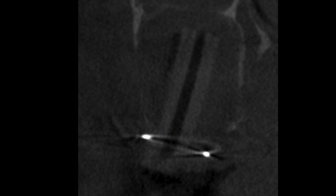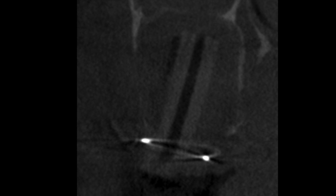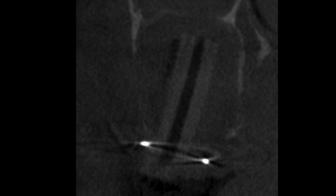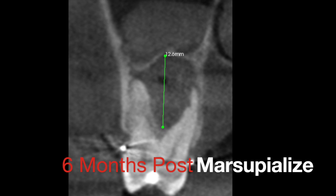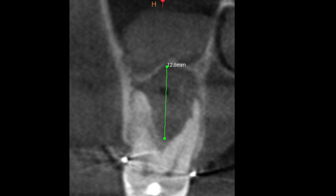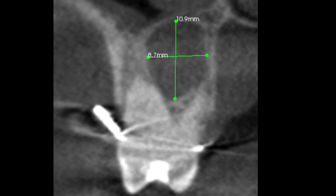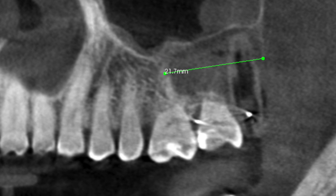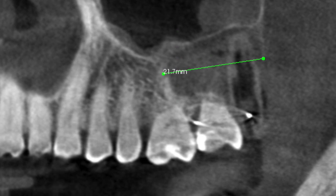A rigid drain was inserted and stabilized with an interdental wire to maintain the opening to the cyst. Here is the patient about six months later with a remarkable decrease in the size of the cyst and increased bone deposition at its periphery. We can also note that the drain has remained securely in place after six months.